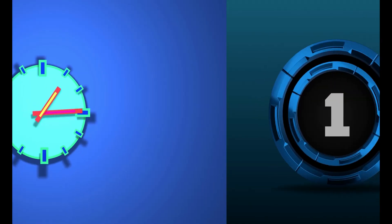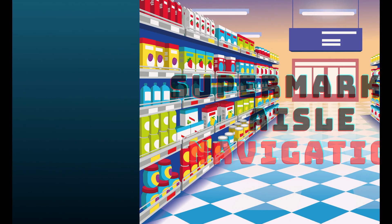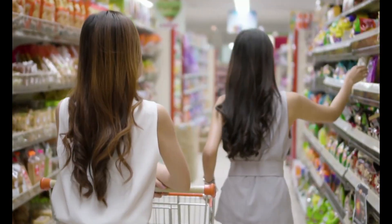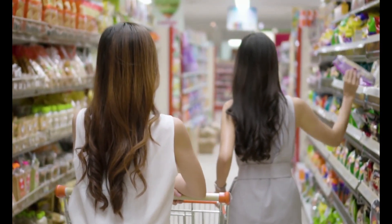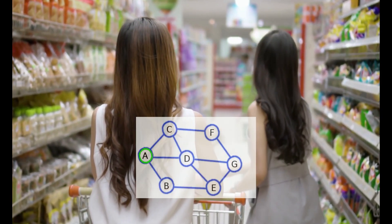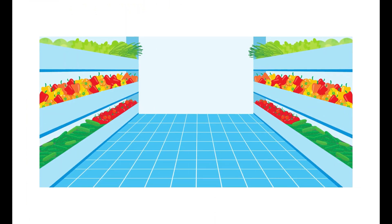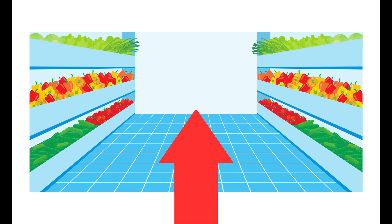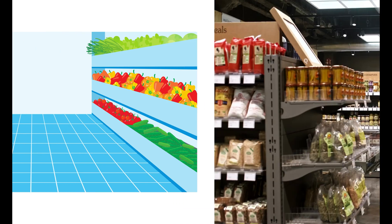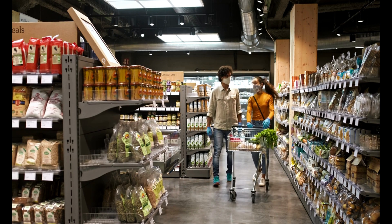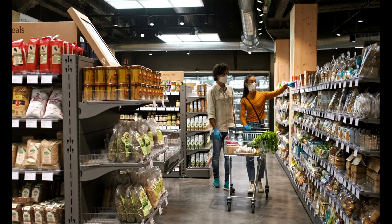Let's begin with BFS. 1. Supermarket Aisle Navigation: When you're shopping in a supermarket and want to find a specific item, you can use a BFS approach. You start by exploring the products in your current aisle before moving to adjacent aisles, so that you don't miss any items on your shopping list.